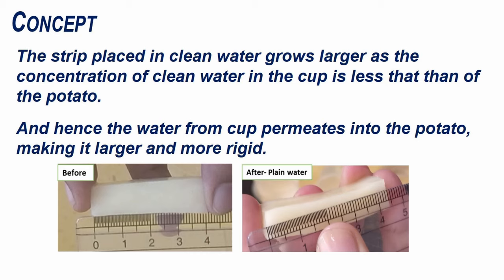The strip placed in clean water grows larger as the concentration of clean water in the cup is less than that of the potato. And hence, the water from the cup permeates into the potato, making it larger and more rigid.